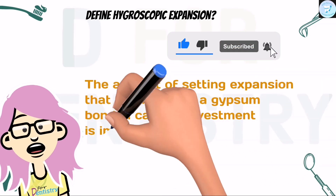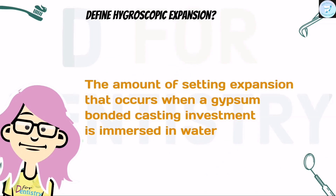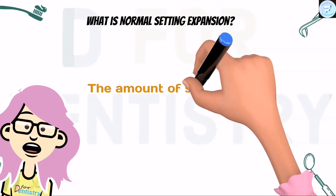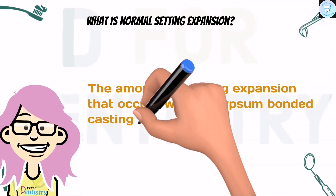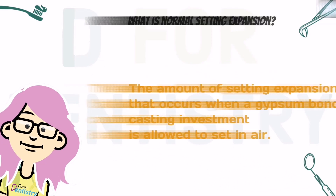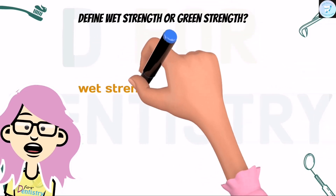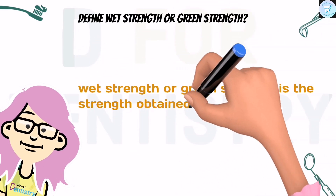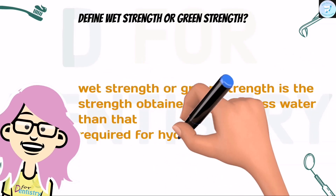What is normal setting expansion? The amount of setting expansion that occurs when a gypsum-bonded casting investment is allowed to set in air. Next, define wet strength or green strength. Wet strength or green strength is the strength obtained when excess water — that is, more than is required for hydration of hemihydrate — is left in the specimen.